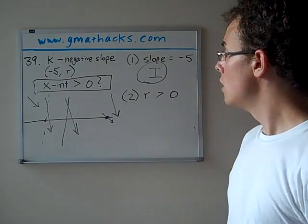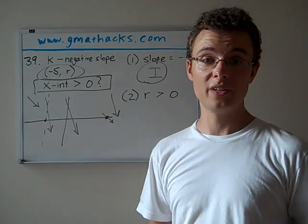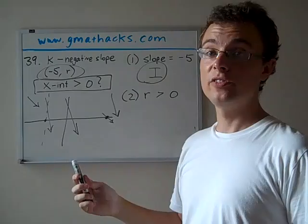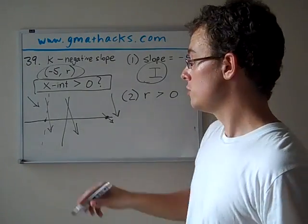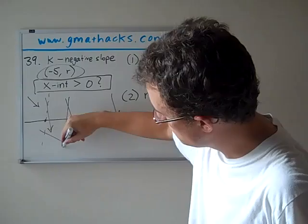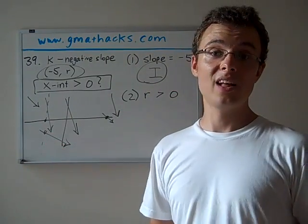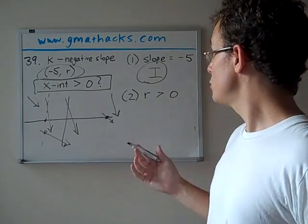Now, statement 2. r is greater than 0. This is where our one point comes in a little bit handy. So we know that it passes through minus 5 something. Now we know that something is positive. So for instance, that line that passes through this line where r would be negative, that line is out of bounds. We can't be talking about that one anymore.